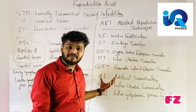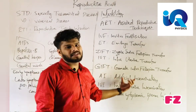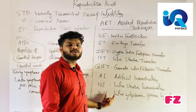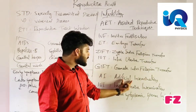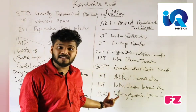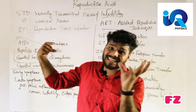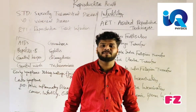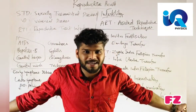AI — Artificial Insemination — involves introducing sperm into the vagina or uterus artificially. When done into the uterus it is called IUI — Intra Uterine Insemination. ICSI — Intra Cytoplasmic Sperm Injection — involves directly injecting a sperm into the egg.